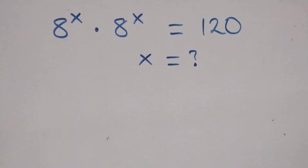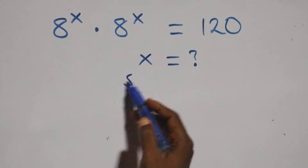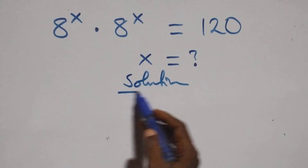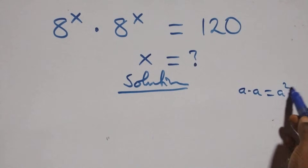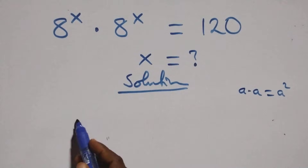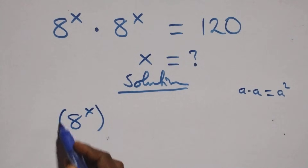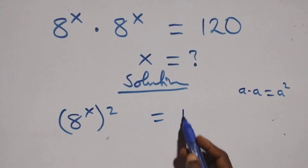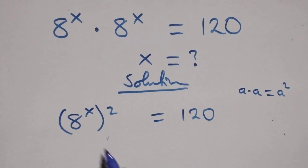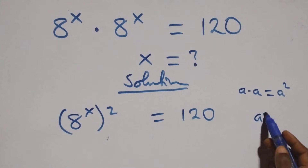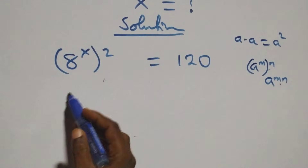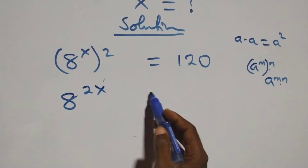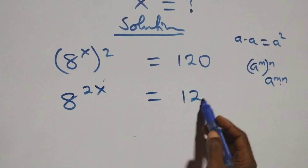Hello, you are welcome. We are here to solve this nice exponential equation. When we have a times a, we can write this as a squared. Similarly, multiplying here and raising to power x gives us (a^x)² equals 120. This also follows the rule that a raised to power n, times 4 raised to power n, is the same as a raised to power mn. So with that, the power multiplies and we have a raised to power 2x equals 120.